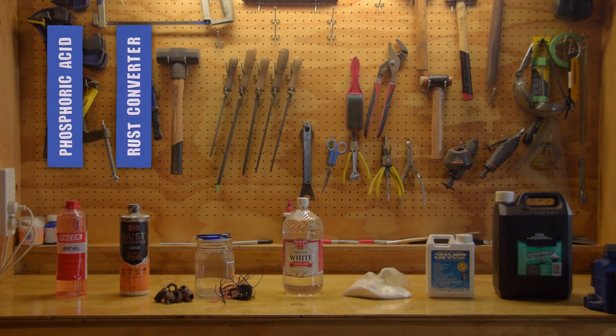Phosphoric acid and nearly all of the commercially available rust treatment products convert rust into an inert iron oxide. These are unsuitable if you're after a bare metal finish. For parts that will subsequently be painted, I like phosphoric acid.